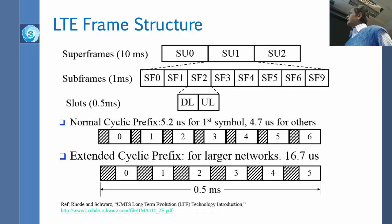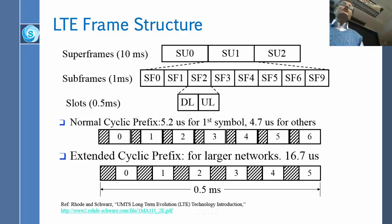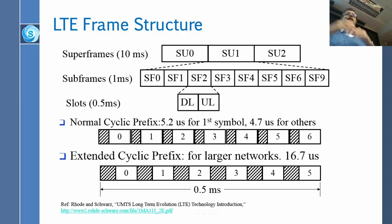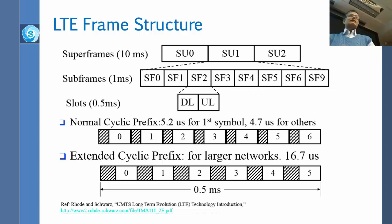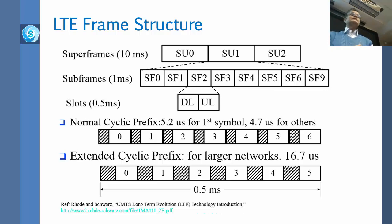There is also an extended cyclic prefix where there is a larger gap, in which case only 5 symbols will be sent and the gap is 16 microseconds. Why 16 microseconds? Because if you are going long distance, you need a longer gap. If short distance, you need a shorter gap — the gap allows you to handle multipath: if one signal went straight and another took a longer path, they will not interfere with each other. So the path difference can be up to 15 microseconds or 4 microseconds.